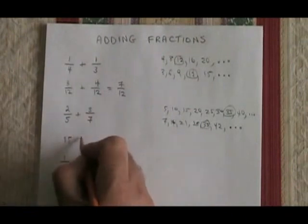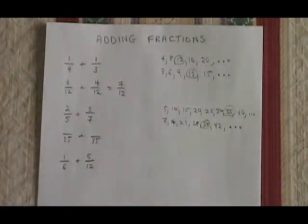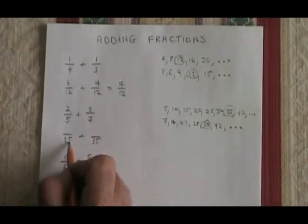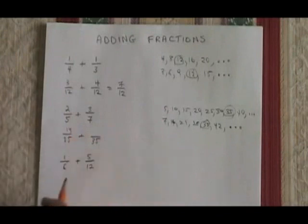So I convert both fractions into new fractions that have 35 as the denominator. 5 times 7 is 35. 2 times 7 is 14. This fraction expands to 14 over 35.